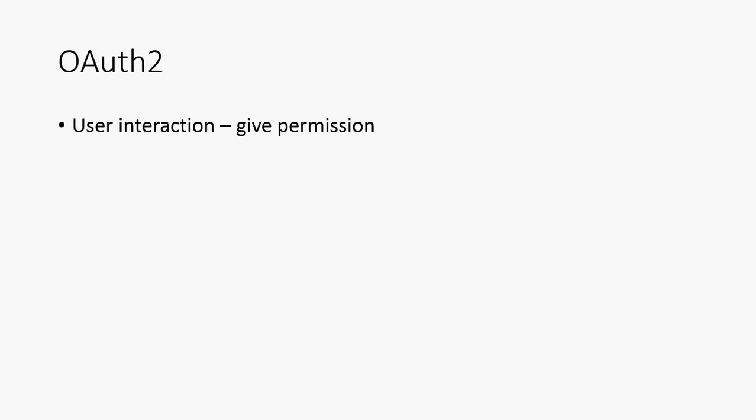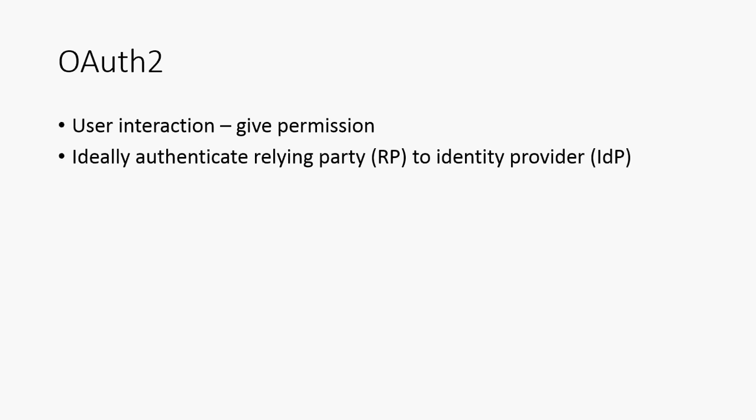How do we actually obtain that permission? There are a few requirements. The first is that there needs to be some kind of user interaction because the user needs to be able to give permission. Secondly, ideally, we would like to authenticate the relying party — that is the application trying to use and access the API — to the identity provider, so that the identity provider knows it is safe to provide that information. If the relying party didn't authenticate, there's a danger of exposing private data to an untrusted entity.